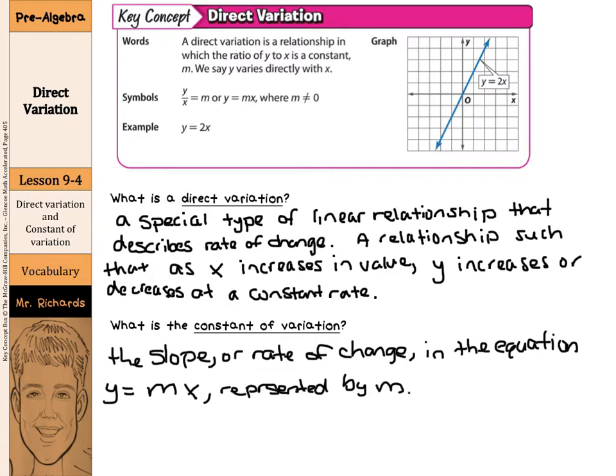Now sometimes the constant of variation is also called the constant of, and this is a very fun word, proportionality. P-R-O-P-O-R-T-I-O-N-A-L-I-T-Y.